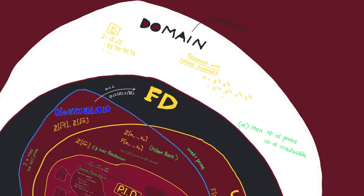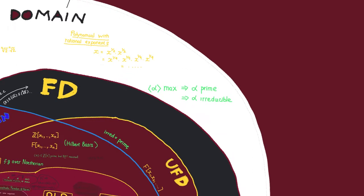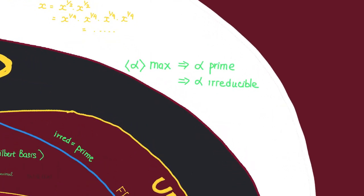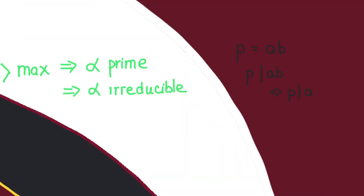However, it doesn't divide either of the terms. For a general domain, the only thing we can say is that prime implies irreducible. This is mainly because integral domains have cancellation.